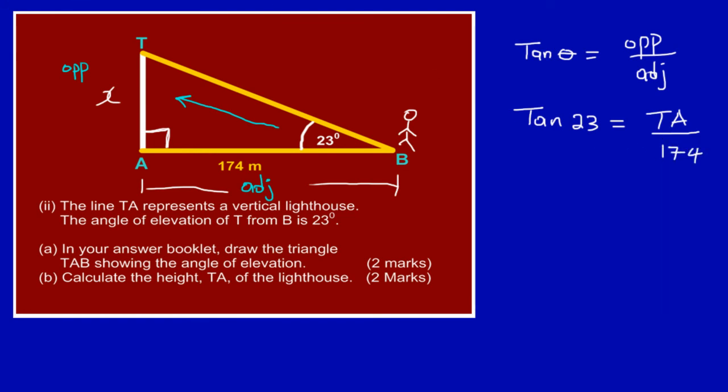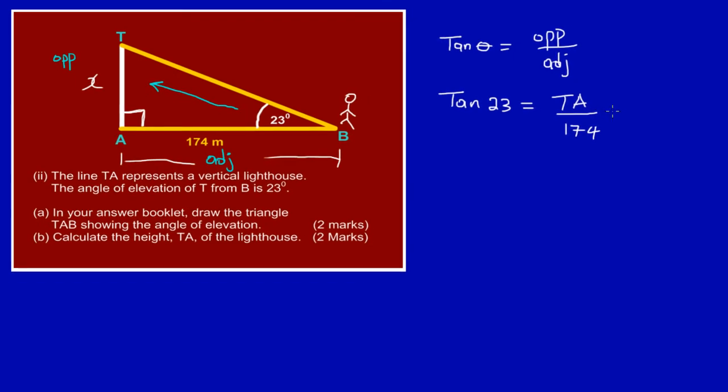Now I need to make TA the subject. I am solving for TA. I need to find the length of TA so I have to make that subject. Now if you notice, 174 is dividing TA. So I have to do the opposite of division which is multiplication to make TA the subject. So I am going to have to multiply both sides of my equation by 174. So basically I'm saying 174 multiplied by tan 23, which is equal to TA over 174 multiplied by 174. If you notice I have multiplied both sides of my equation by 174. Now that 174 will cancel out with that 174, that's 174 over 1 so both cancels out.